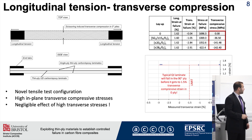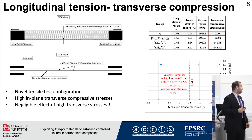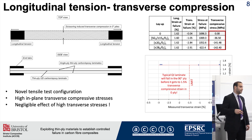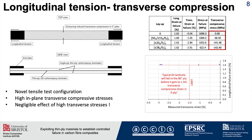In this summary table, you will see the measured longitudinal and transverse strains to failure and the calculated stresses for all configurations, including the baseline. In a uniaxial test, we wouldn't have transverse stresses arising at the laminate level. However, in this case, transverse stresses arise in the central UD layers because of the Poisson contraction of the angle plies, and these stresses can be calculated from the measured strains and the material properties. We can see very high transverse strains, and if you plot these measured transverse strains against the longitudinal fiber failure strain, there is a negligible effect of high transverse stresses on the failure strain.